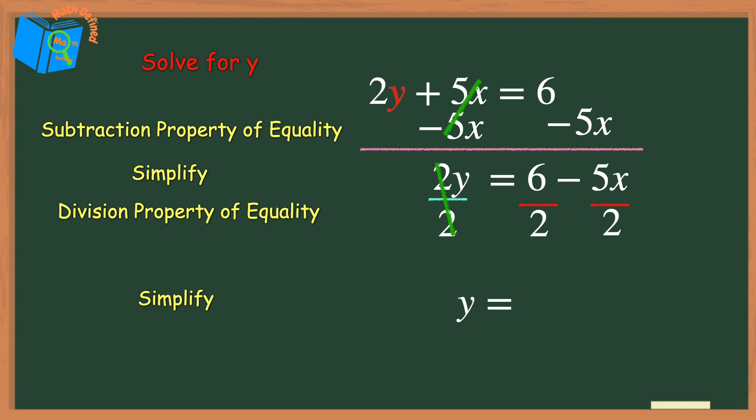So now I can divide 6 by 2 to get 3. And this next term, I can just leave it as the fraction negative 5 over 2x. I know that 5 over 2 is an improper fraction, but I don't need to simplify it to a mixed number here. And that's it. We're done. Solving for y, y equals 3 minus 5 over 2x.